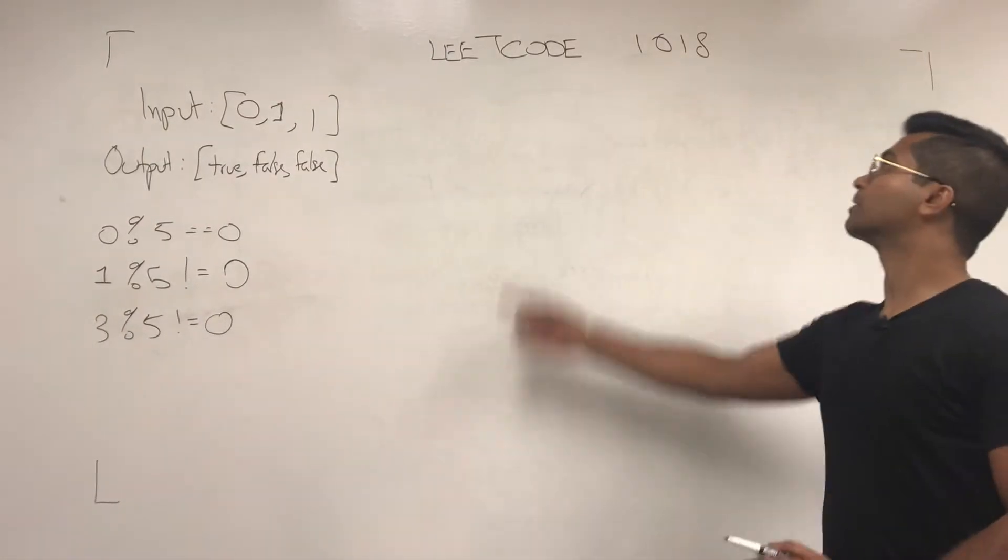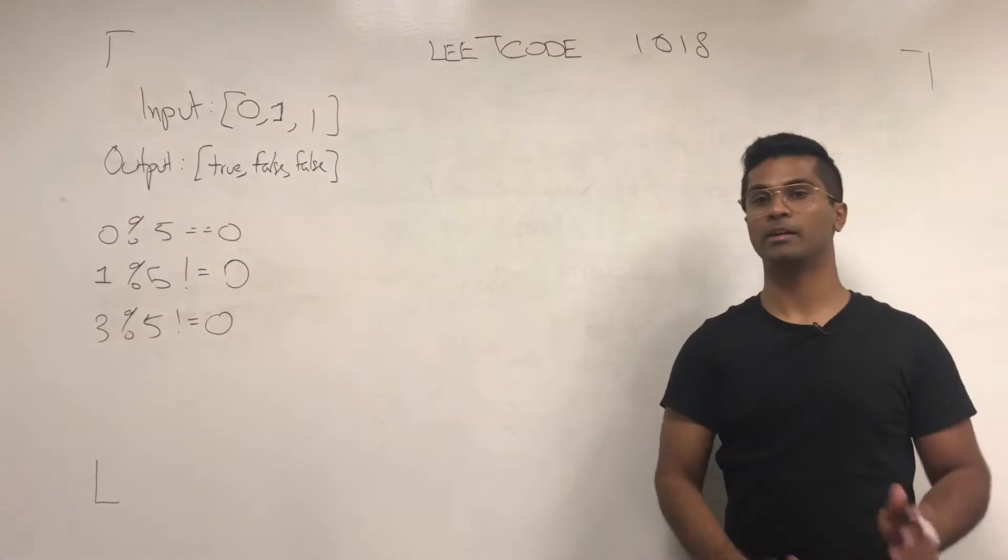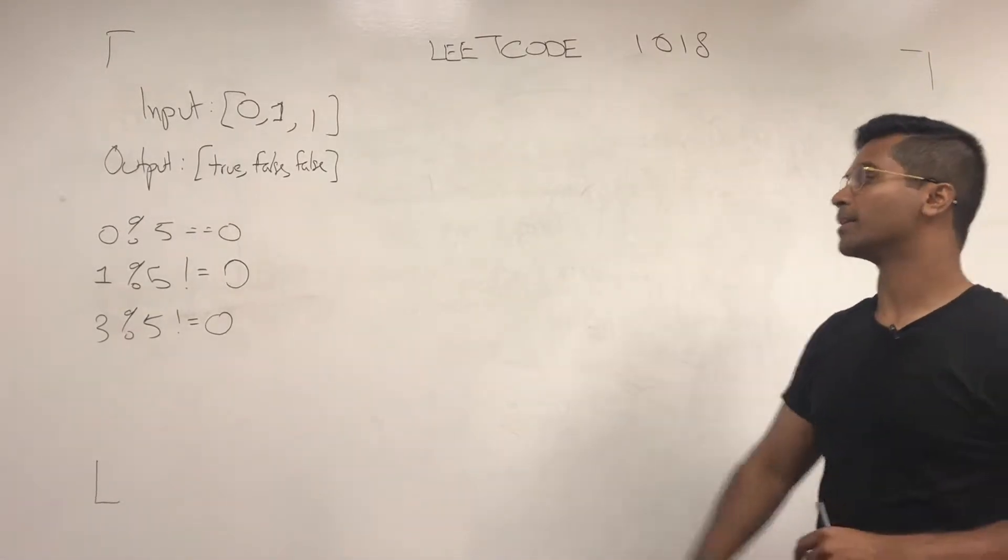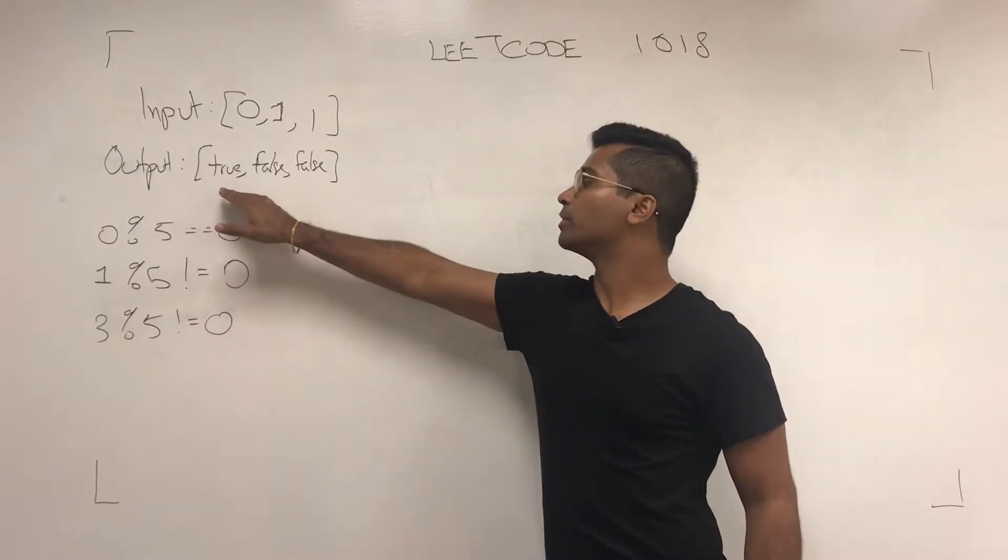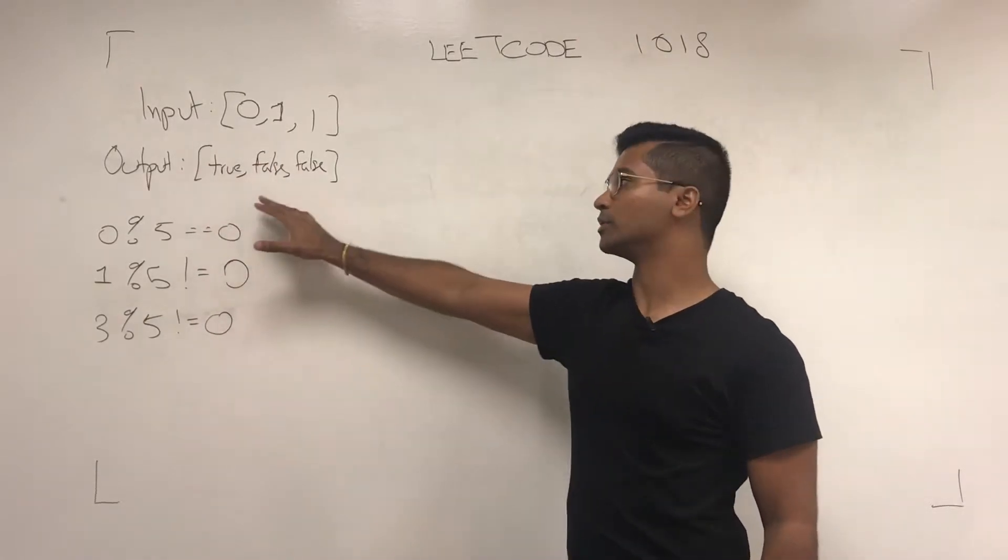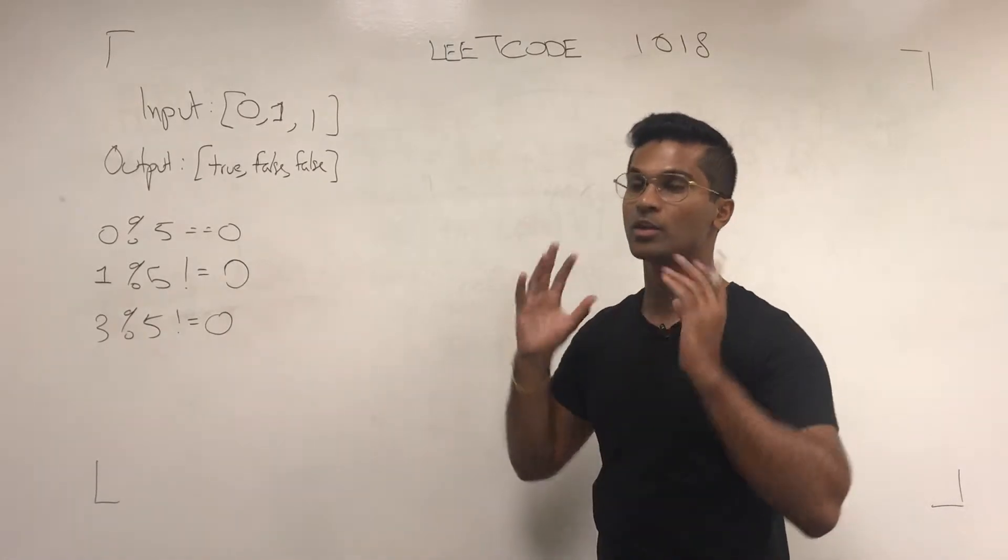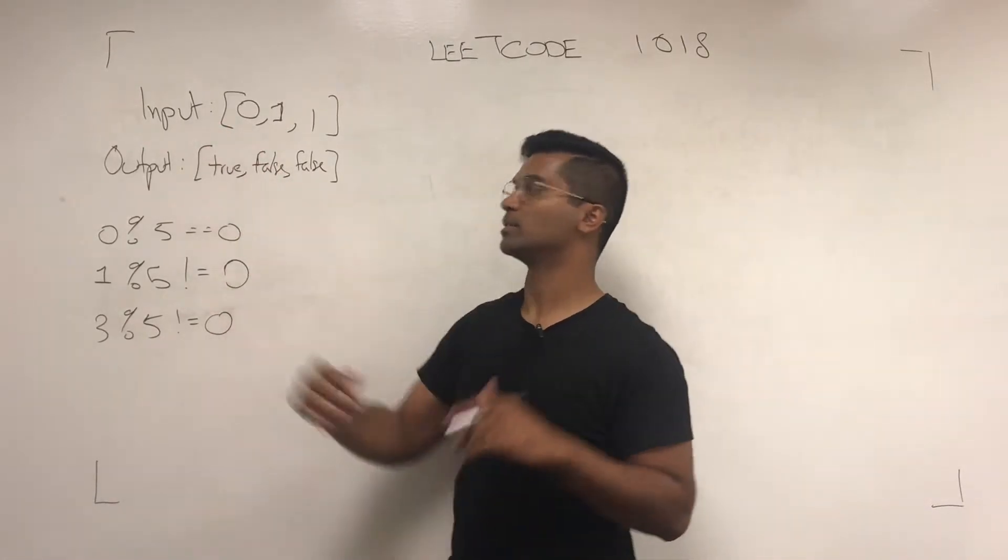What's up, everyone? Today we're going to be solving LeetCode 1018, Binary Prefix Divisible by 5. Pretty much how this problem goes is that they want an output of a list of booleans, which represents if the subarray starting from the beginning is divisible by 5.